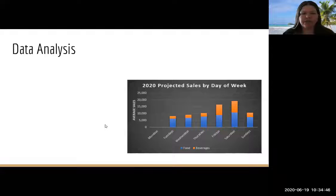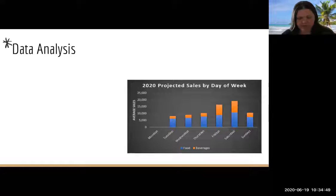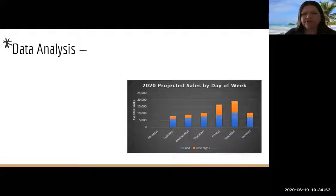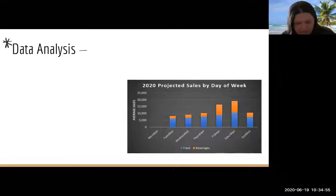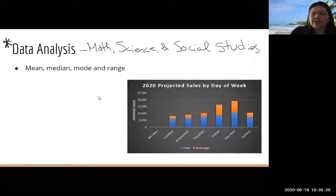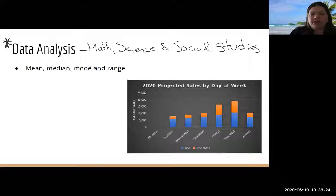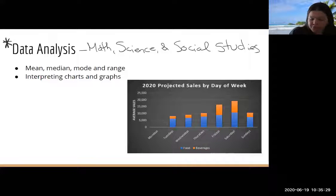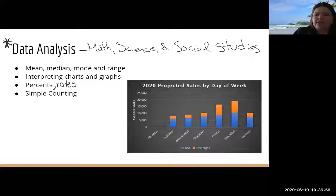So another big one for the GED is data analysis. And I love this one because this is the one area of math where we can be studying for three tests at the same time. The concept of data analysis is on the math test, but it's also on the science and the social studies tests. Again, just like with all the other things I've been talking about so far, you will have a calculator when you do all these skills. Even on the science and social studies tests. First area of data analysis is when we're looking at like statistics. And on the GED, that's just mean, median, mode, and range. Interpreting charts and graphs. So bar graphs, line graphs, circle graphs, tables, percents, percent increase, percent decrease. I should probably put percents and rates. And then simple counting.